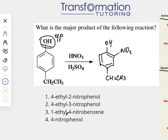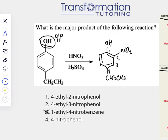Next, let's figure out the correct name for this. A benzene ring with OH on it is called phenol. Once we have three or more groups, we cannot use ortho/para labels — we have to number the carbons. So we number: 1, 2, 3, and 4. My nitro group is on the second carbon and my ethyl group is on the fourth carbon. Therefore my answer should be 4-ethyl-2-nitrophenol.